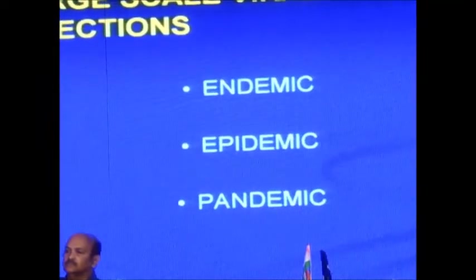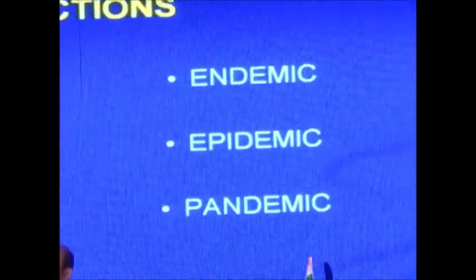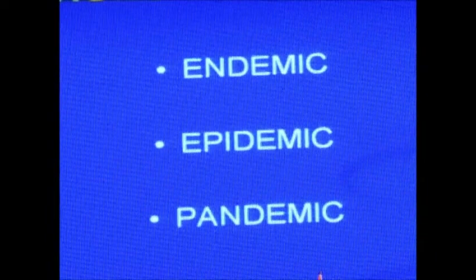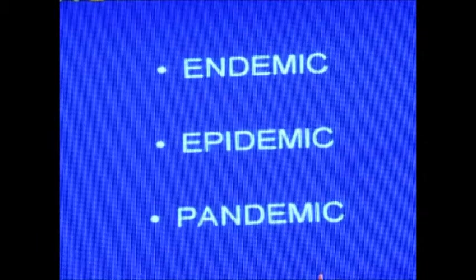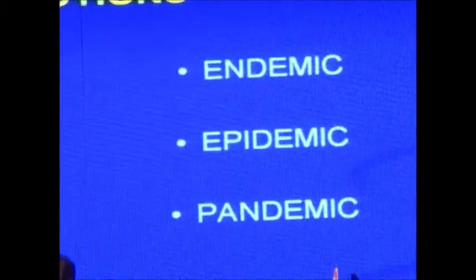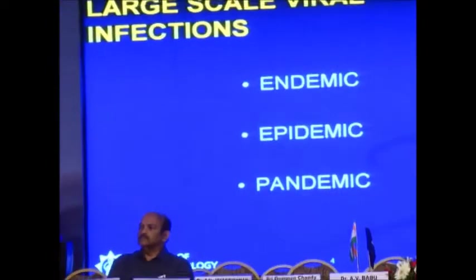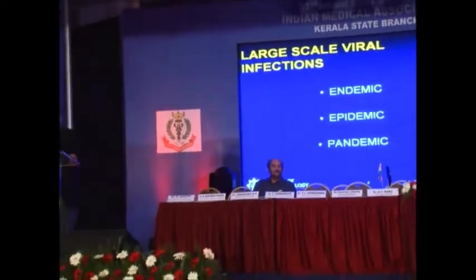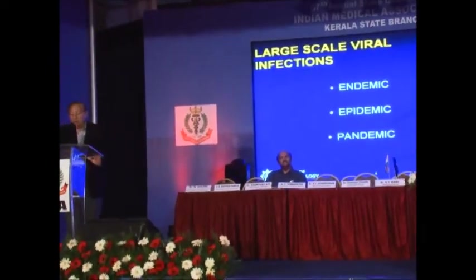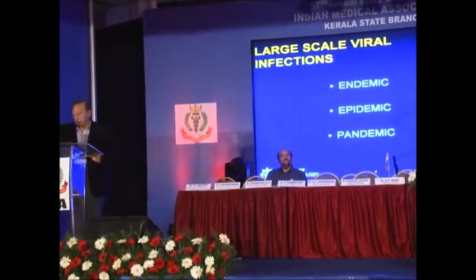Large-scale viral infections can be of three types. An endemic infection refers to a virus that's been in a population for a long time — nothing new is occurring, it's the standard disease at about the same rate. Epidemic simply refers to the development of a higher rate of infection of something we know about, or maybe something we don't yet know about, like when AIDS came. Pandemic is when it becomes global.